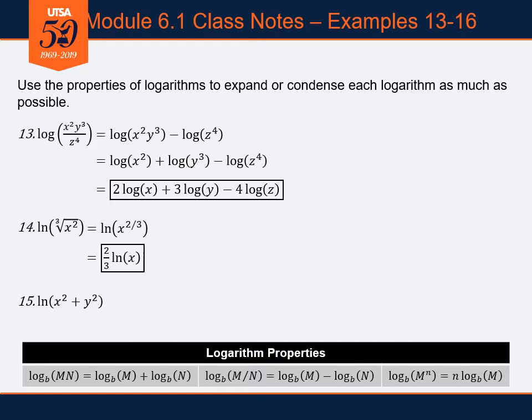For question number 15, we've got the natural log of x squared plus y squared. I don't see a product, I don't see a quotient. Be careful — I do see powers, there's x squared and there's y squared. But the fact that I've got a sum of these two terms is a deal breaker in terms of trying to use any of these logarithm properties.